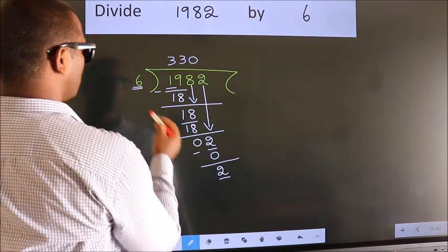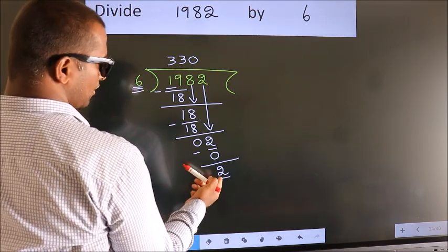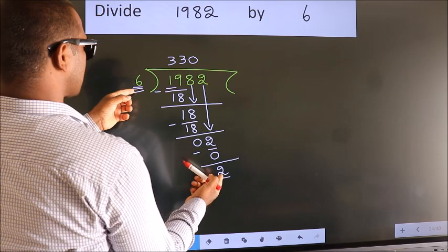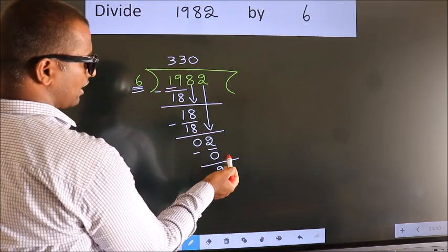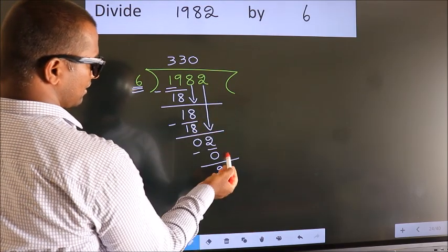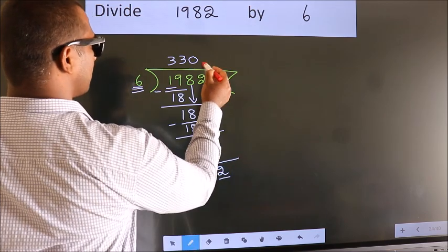Here we have 2. Here 6. 2 smaller than 6. And we did not bring any number down. So now we can put the decimal point.